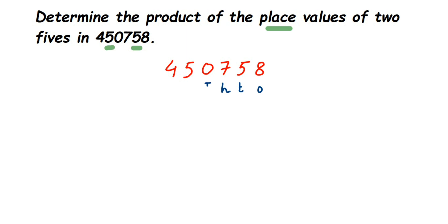If you see the first five, I'm going to start from the right side. The first five is in tens place, so we're going to write down the place value of it. Place value of first five is equal to - since it is in the tenth place - it will be five into ten, which will be equal to fifty.